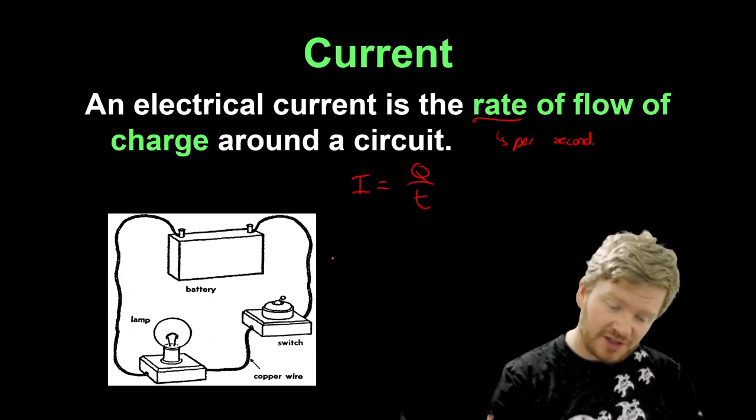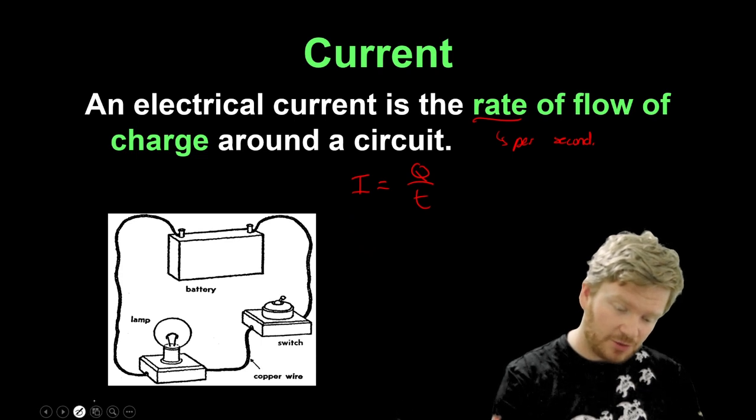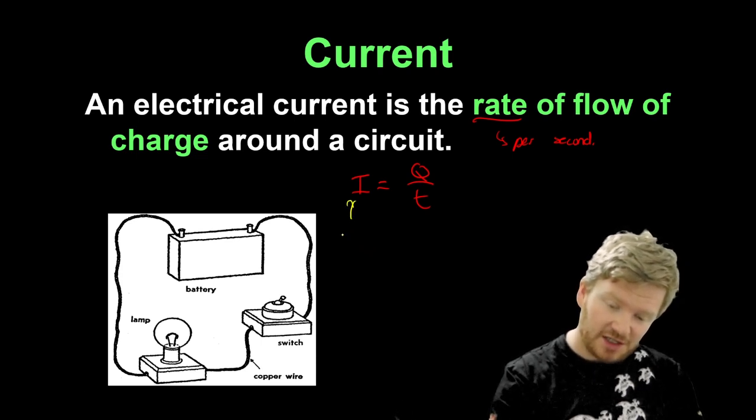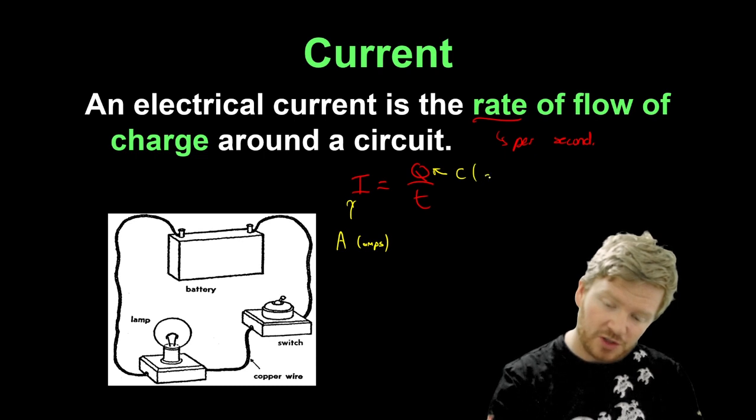Just remember the units then. So we have I is equal to Q divided by T. I is measured in amps, which has a symbol capital A. Q, therefore, will be measured in Coulombs, which is a capital C. And T is obviously measured in seconds.